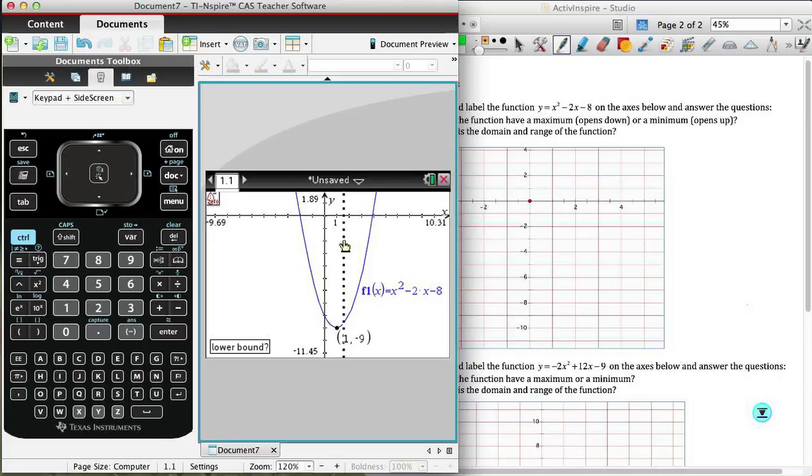So I'm going to select that. Once again, I need a left, a lower bound and an upper bound. So a point to the left and a point to the right. So I'll start over here with the x-intercept on the right-hand side. So a point to the left, a point to the right. And there we have our first x-intercept at 4, 0.